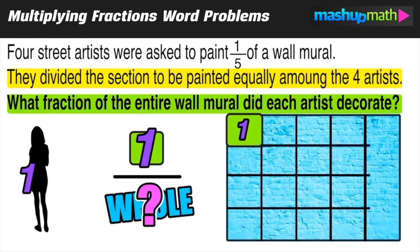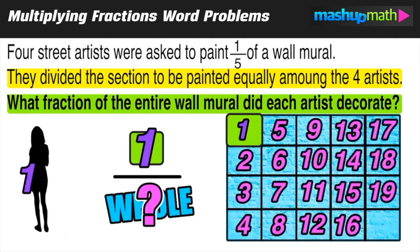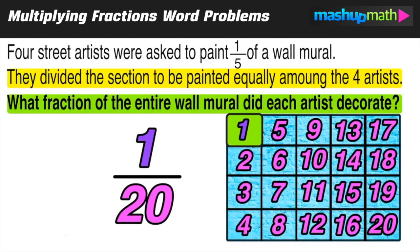We can figure that out by cutting each of those one-fifth sections into fourths, just like we did with the first one, and then counting how many make up the entire thing. Doing it this way gives us a total of 20, so we know that each artist decorated 1/20th of the entire wall mural. This should make sense because that 1/4 was multiplied by each 1/5 section of the entire mural.